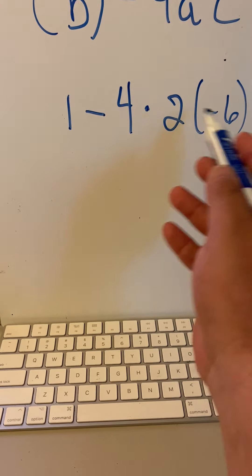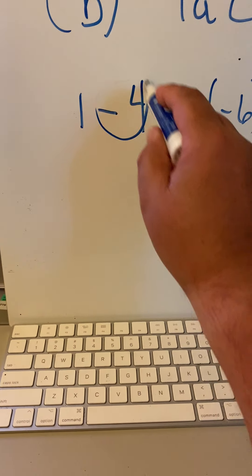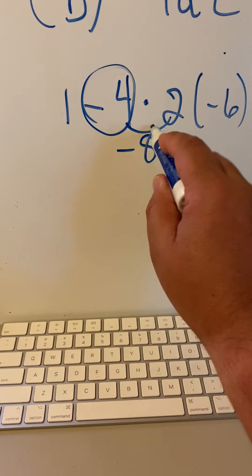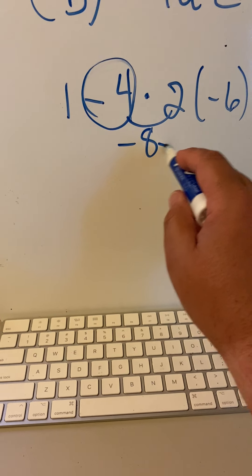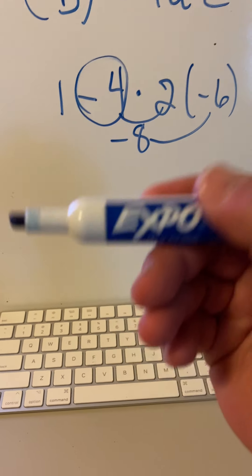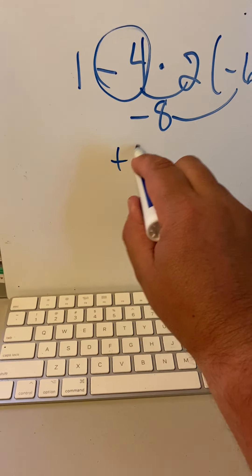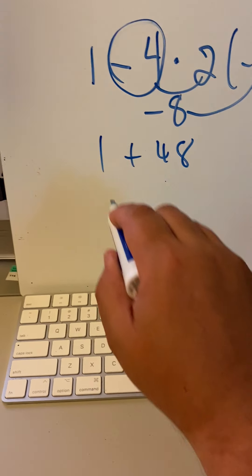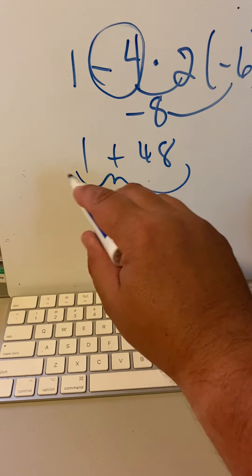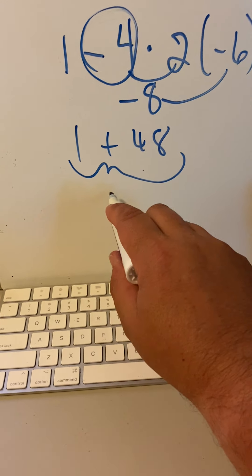So let's get rid of the multiplication. What is negative 4 times 2? Negative 8. What is negative 8 times negative 6? A positive 48 and the 1. The discriminant equals 49.